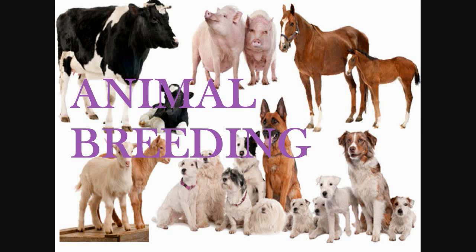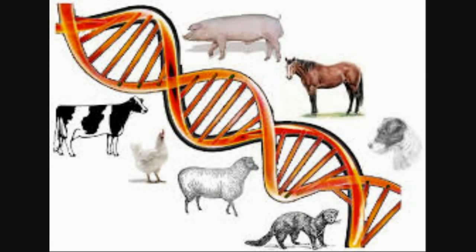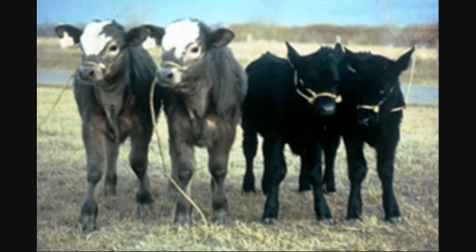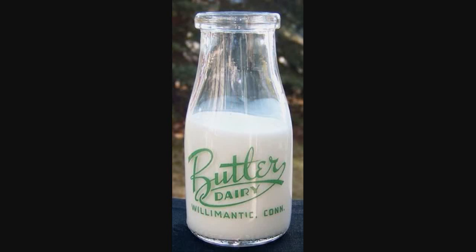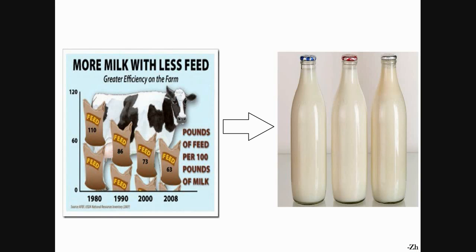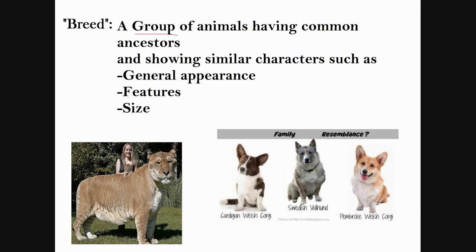Animal breeding is the most important part of animal husbandry. First of all, selecting the required breed which is healthy and then breeding them is crucial. Sometimes when the breed is selected, it is not capable of yielding as much produce as we desire, so that is where animal breeding comes into existence.